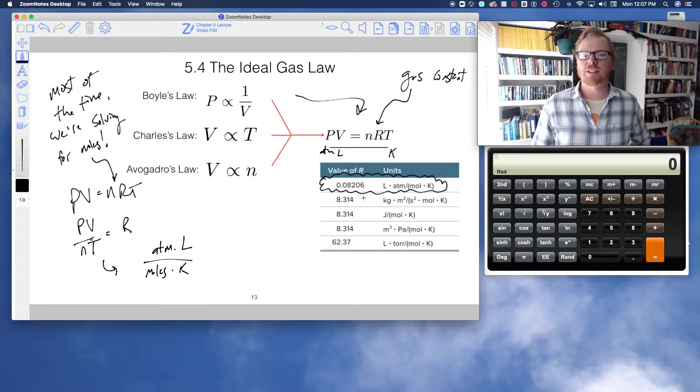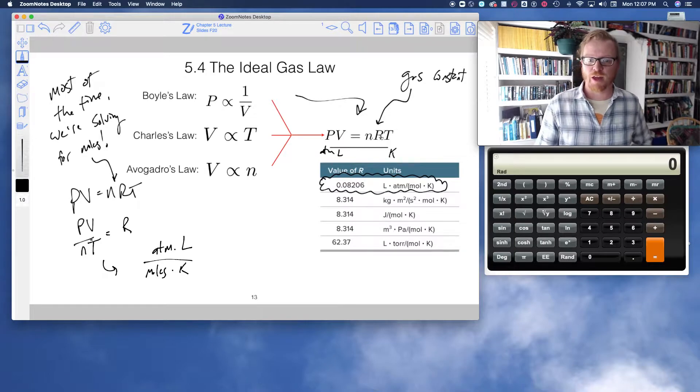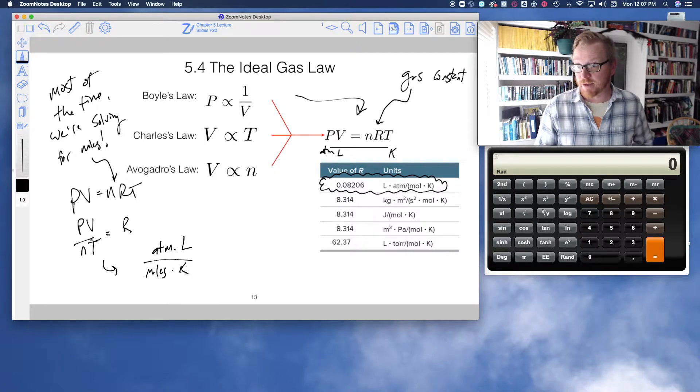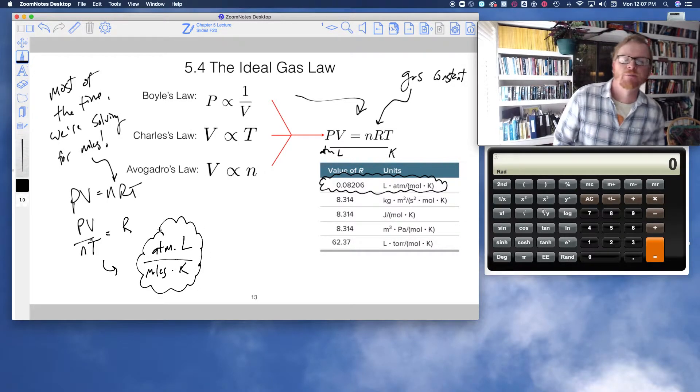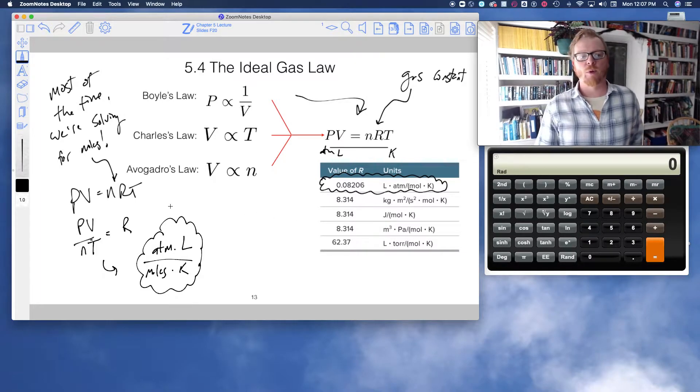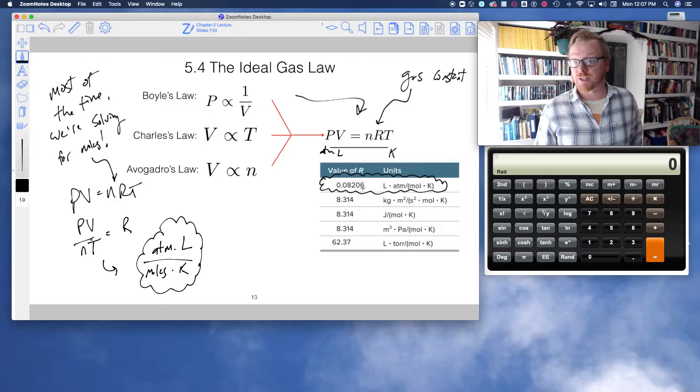And so we notice that there are other flavors, that is, I like to call the other flavors of R, and it's just involved in using different units in the PV equals NRT equation. So these are the units that we prefer to use. Atmospheres, liters, moles, and Kelvin. And then that way, when we use this equation, we're going to use the value 0.08206 for R.